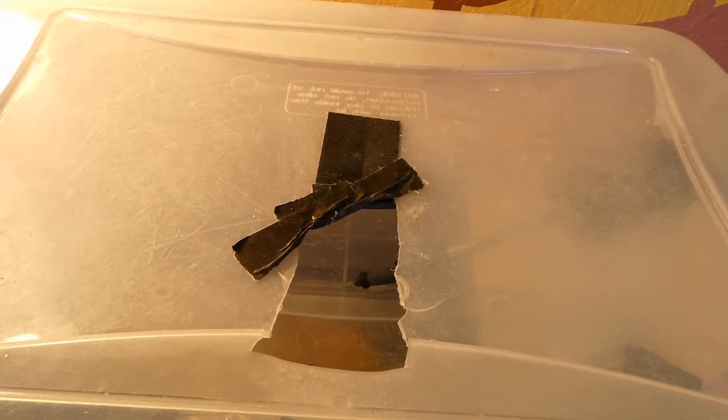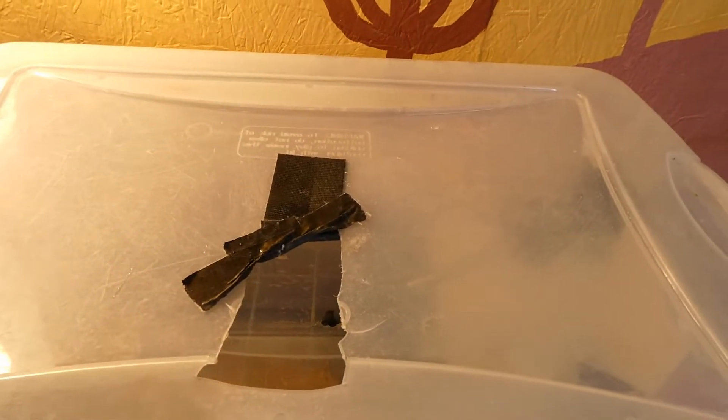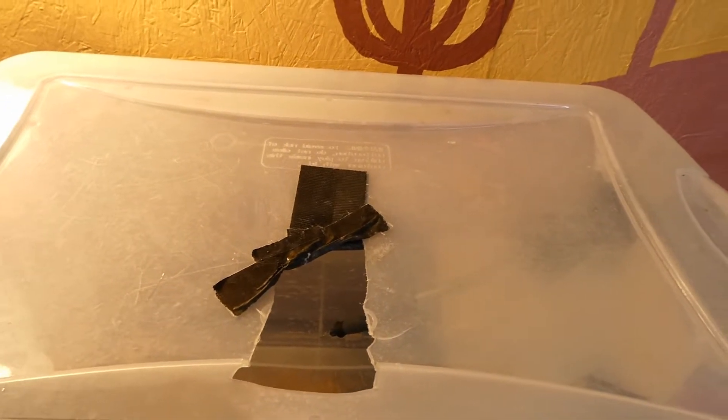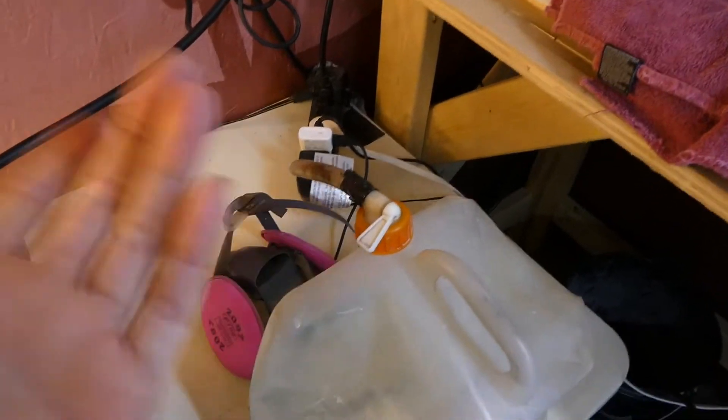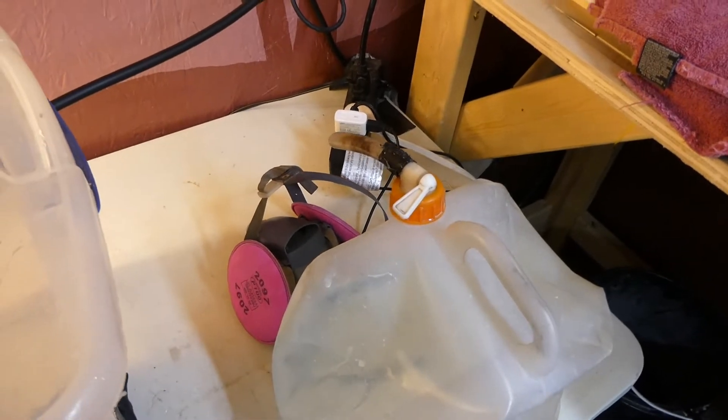Then I cut a hole in the top here for my water jug to just sit on top, and the valve here is adjustable so I can get whatever kind of drip that I want.